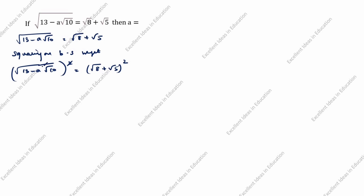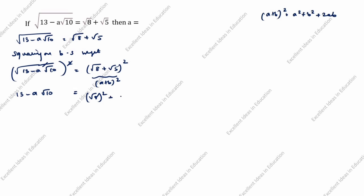The square root cancels, so 13 minus a root 10 equals — applying the (a + b)² formula, which is a² + b² + 2ab. Here a is root 8, so root 8 whole squared; b is root 5, so root 5 whole squared; plus 2 into root 8 into root 5.